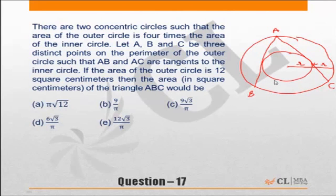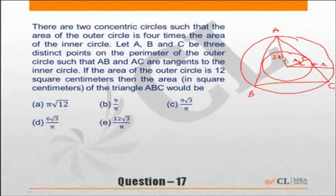AB and AC are tangents to the inner circle, and the area of the outer circle is 12 square centimeters. We know the radius of the inner circle is r and the outer circle is 2r. Using the Pythagorean theorem: (2r)² minus r² gives root(3)·r. So the ratio is 1 : √3 : 2, meaning this angle must be 30°, and this angle is also 30°. That means triangle ABC is going to be an equilateral triangle.